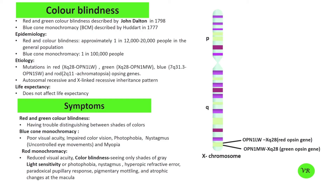Most cases of colour blindness are inherited and are caused by mutation in one of the opsin genes: red opsin gene (OPN1LW), green opsin gene (OPN1MW), or blue opsin gene (OPN1SW). Red and green opsin genes are present on the X chromosome.